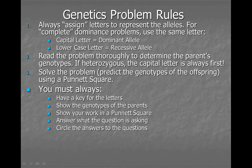Here are the genetic problem rules we've been using all along. Please keep in mind you must always have a key for the letters, show the genotypes of the parents, show your work in a Punnett square, answer what the question is asking, and circle the answers to the questions.